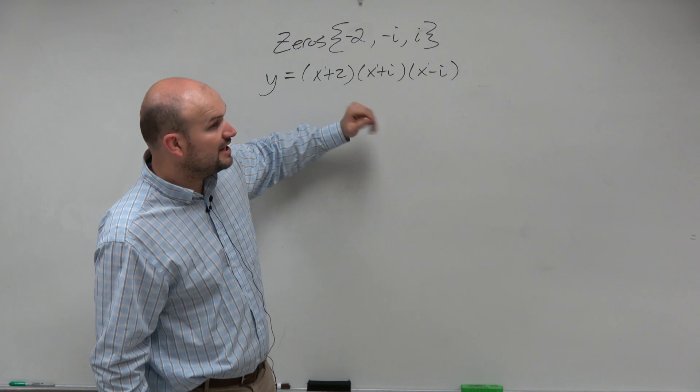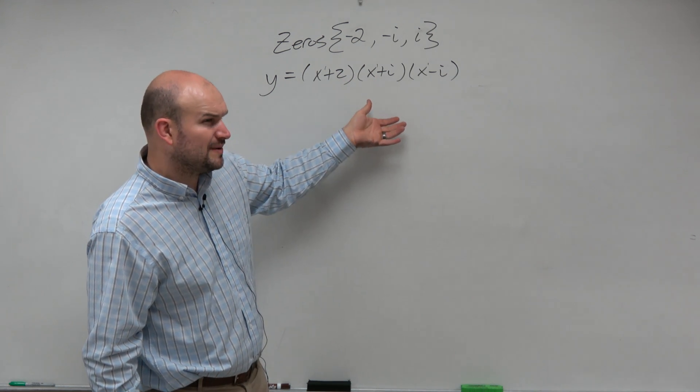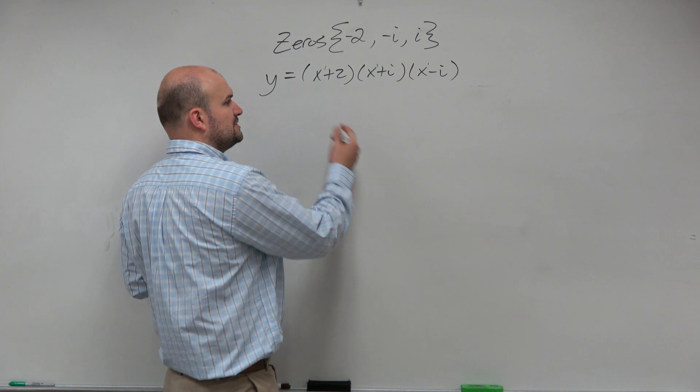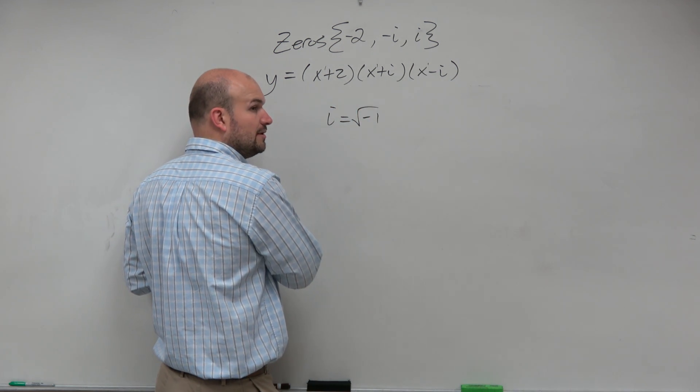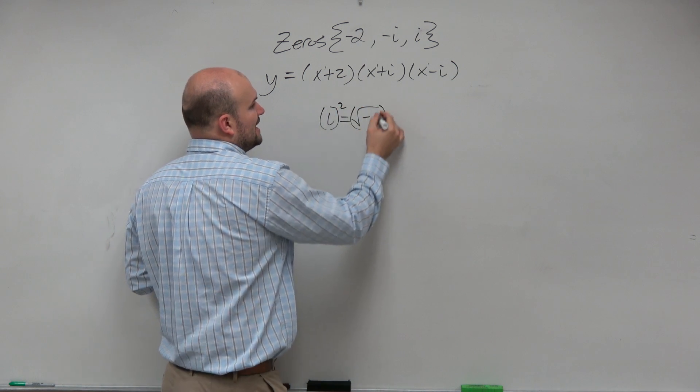So again, on this one, now we've got to just multiply everything out. Now, we've got to multiply complex numbers, which hopefully, if you guys remember from Algebra 2 days, we said i, our imaginary unit, was negative 1, right? If you guys square both sides, you get i squared equals...